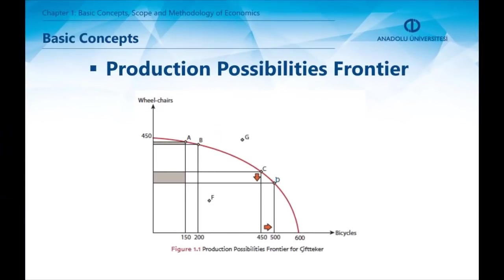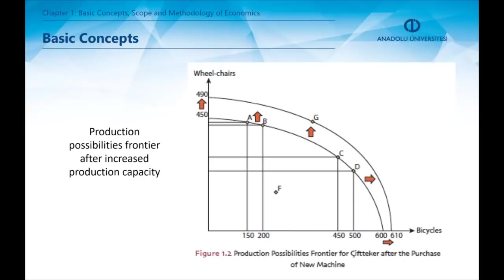Another important concept in economics is the production possibilities frontier. Having limited options means that we can produce a limited amount of products. This can be illustrated using the production possibilities frontier. Points A, B, C, and D are production options for a firm that produces only two products — all of those points are possible for the firm. Point F is also possible but not optimal, meaning the firm's resources are not fully employed. Point G is not a possible combination because it exceeds the firm's capacity — no matter what, the firm can't produce that amount of both products.